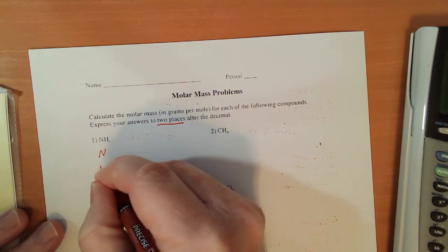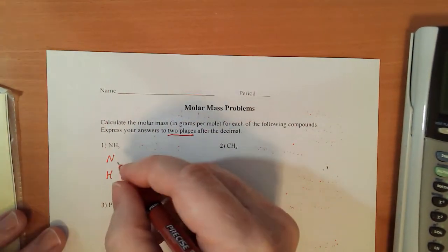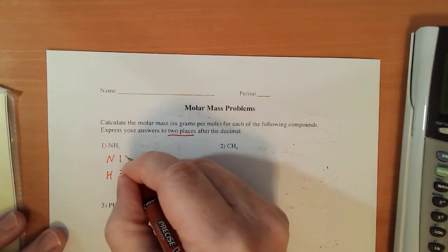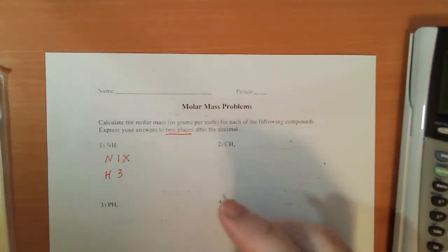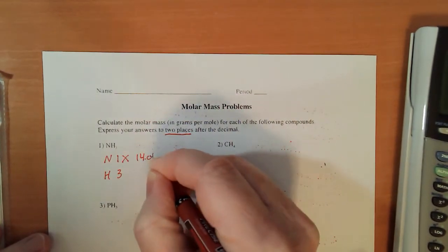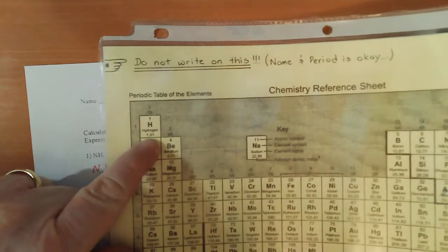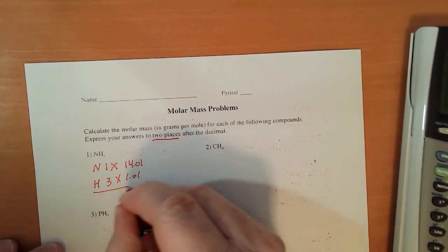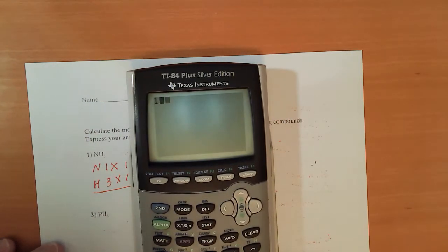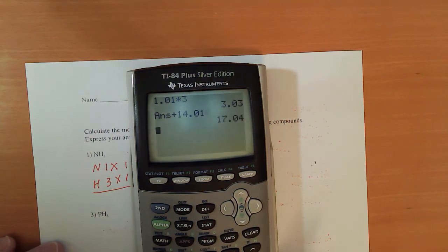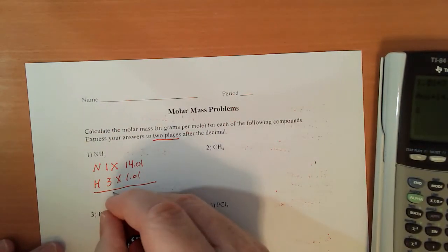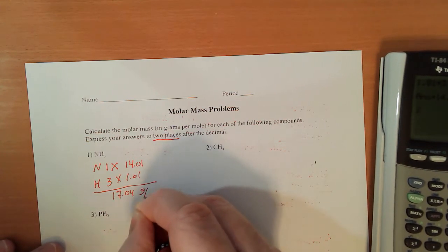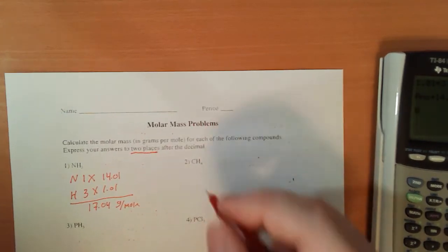NH3, I've got nitrogen and hydrogen. There's one nitrogen and three hydrogens. On my periodic table, nitrogen is 14.01 and hydrogen is 1.01. So I'll use my calculator, 1.01 times 3 plus 14.01 and I get 17.04 grams per mole.